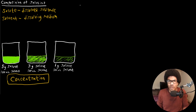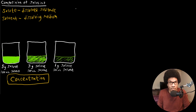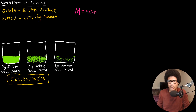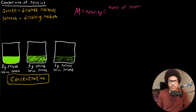The way that we quantify the concentration of a solution — we can do it in multiple ways — but the most popular method is to use something called molarity. We use a capital M to denote molarity. The way you calculate molarity is you take the moles of your solute and put that over the liters of your solution.